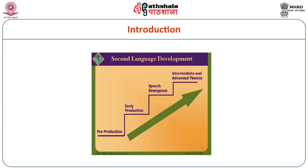Second language development has four stages: pre-production, early production, speech emergence, and then intermediate and advanced fluency. The first stage, known as pre-production, is also known as the silent period.